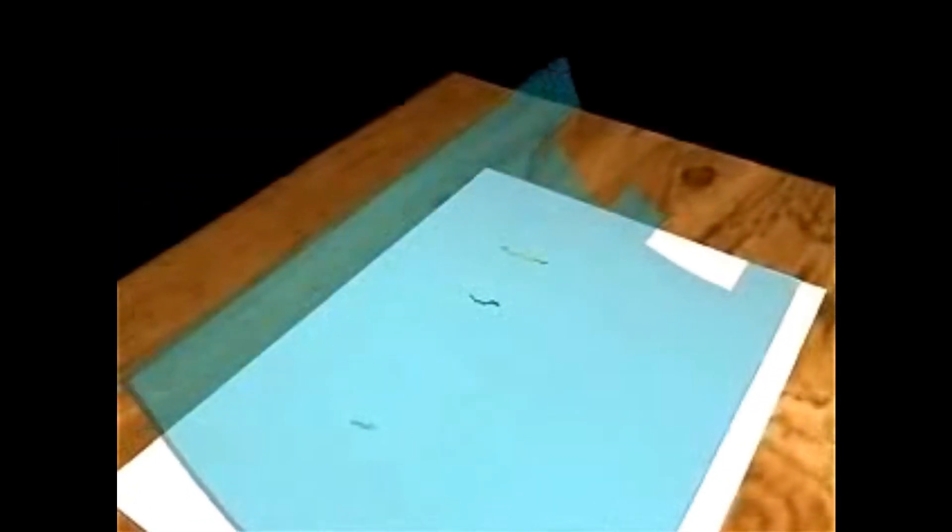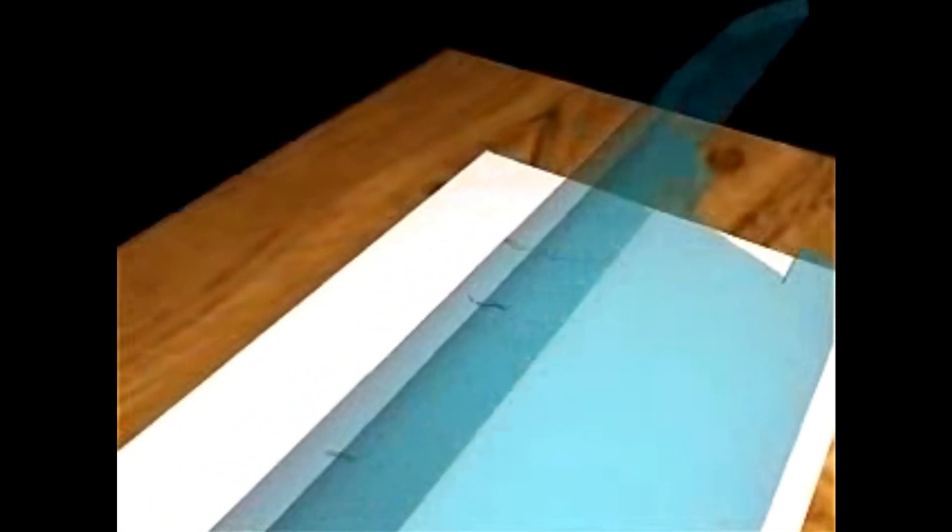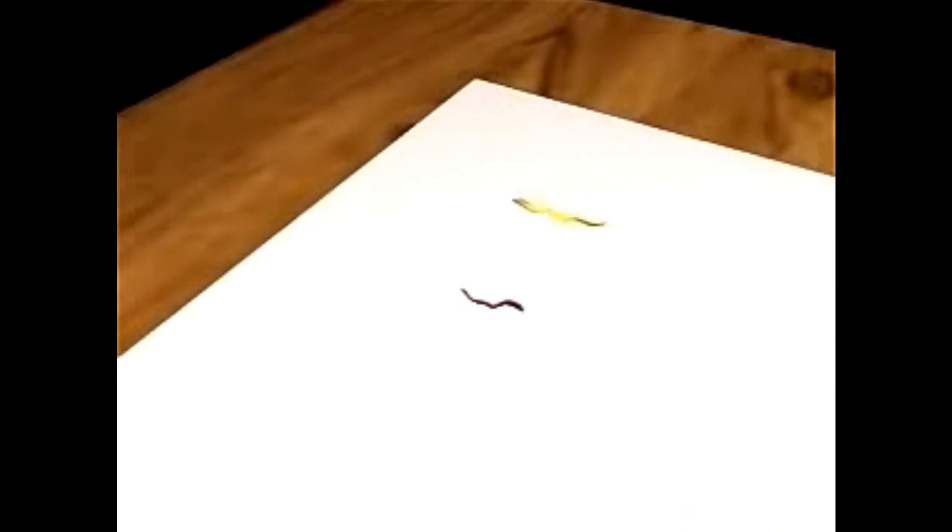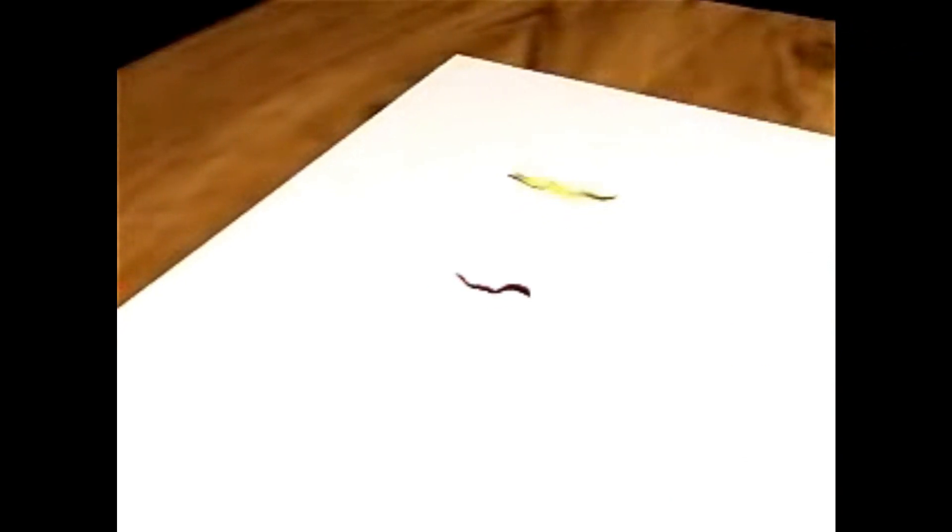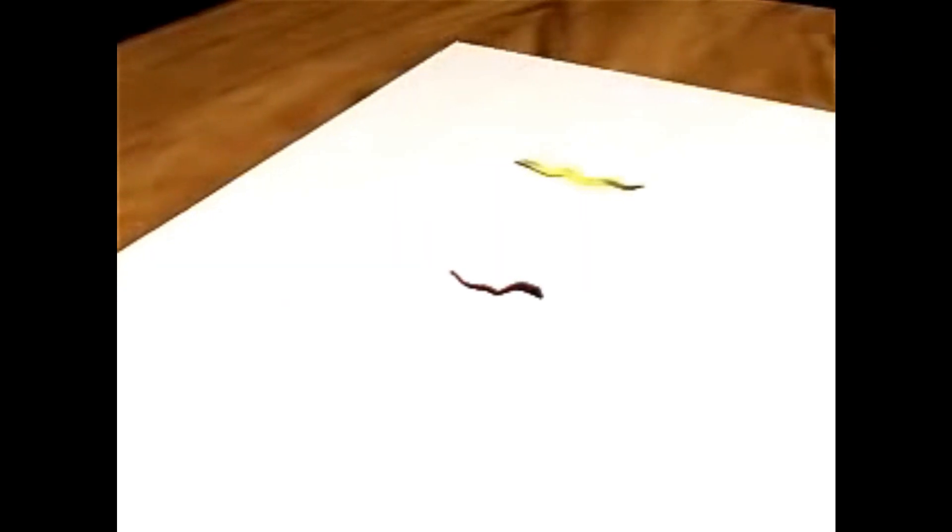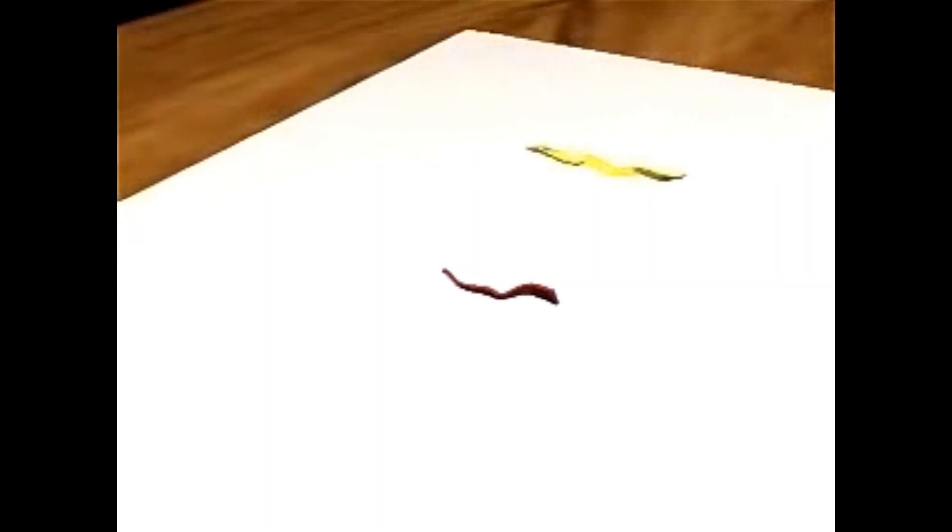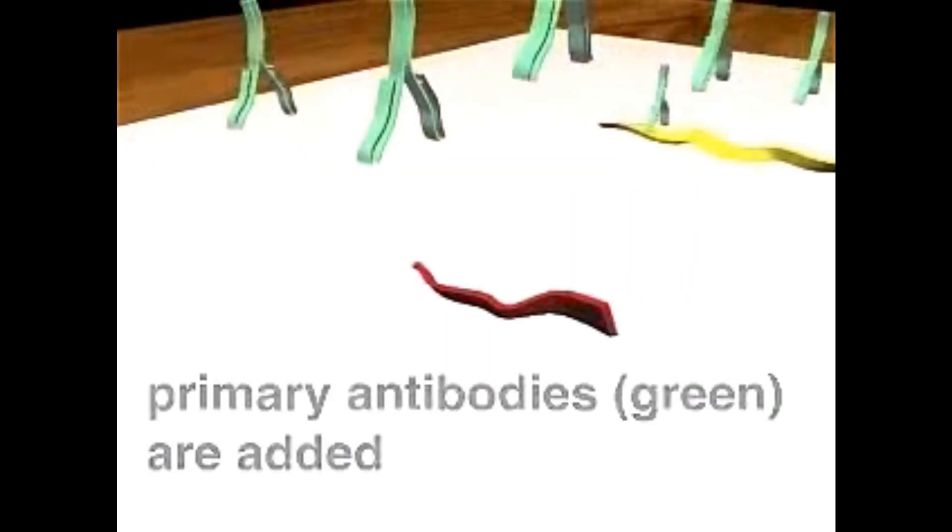The gel is then discarded and inert proteins such as serum albumin is used to coat the membrane so that no other proteins will stick to it. A primary antibody is chosen to specifically bind to the protein of interest. The red one here is the protein. Albumin prevents the antibody from sticking to the membrane.